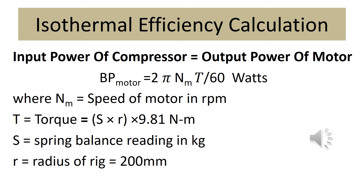To calculate the isothermal efficiency, initially the input power of the compressor is to be determined. It is similar to the output power of the motor itself, and can be found using the expression: Power = (2π × n × T) / 60, where n is the speed of the motor and T is the torque — which is the multiplication of the spring balance reading and the radius of the rig, say 200 mm. By means of that, we can find out the input power of the compressor.